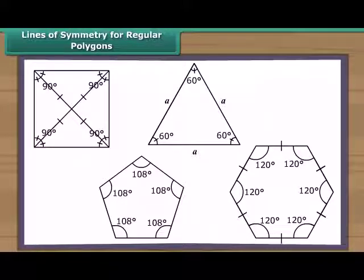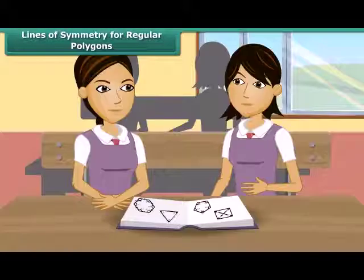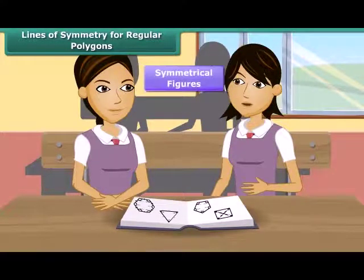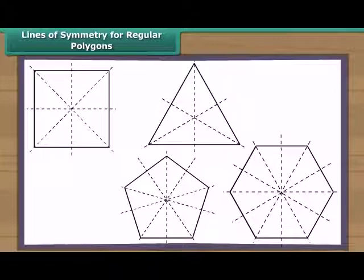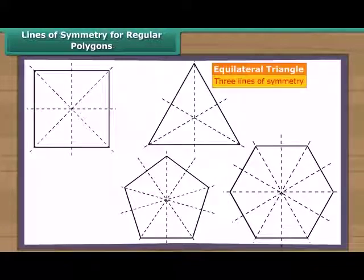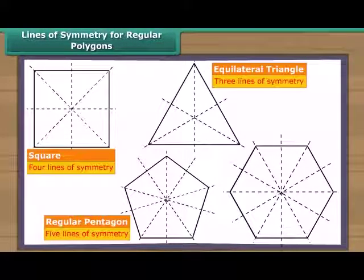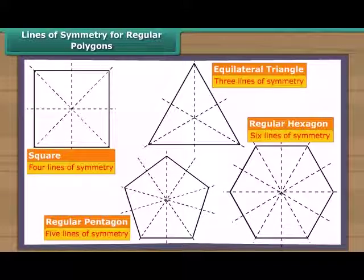All their sides are equal and the measures of their angles are also equal. The regular polygons are symmetrical figures and have many lines of symmetry. An equilateral triangle has three lines of symmetry. A square has four lines of symmetry. A regular pentagon has five lines of symmetry. And a regular hexagon has six lines of symmetry.